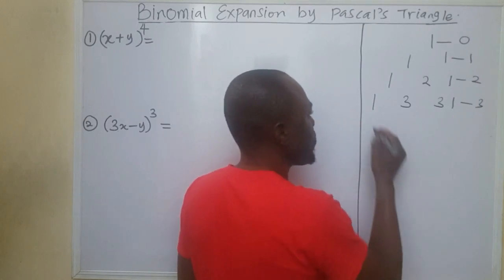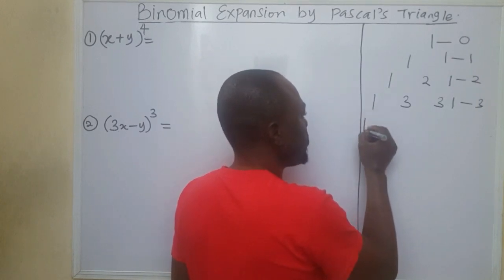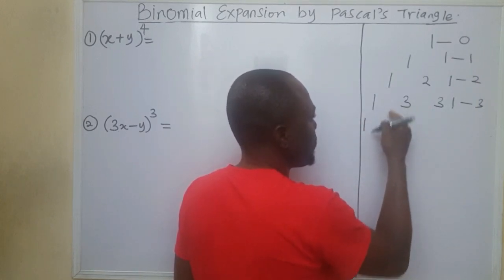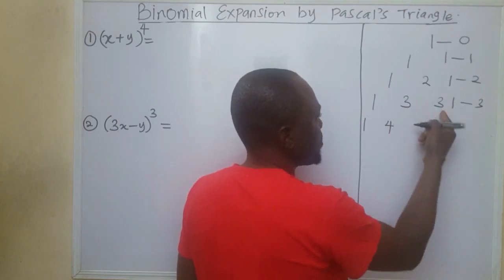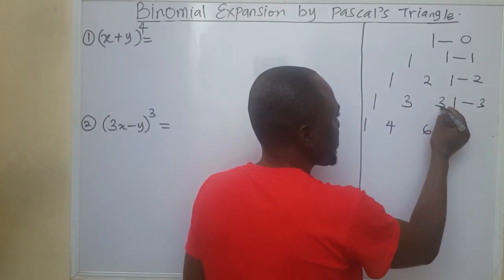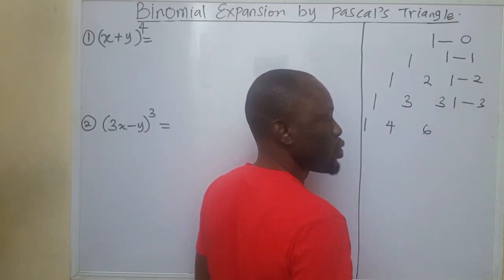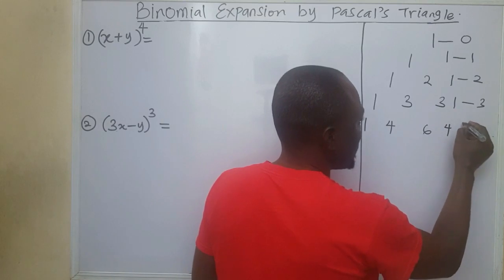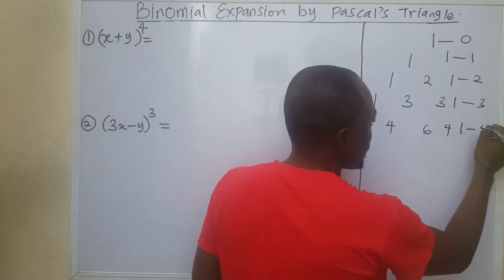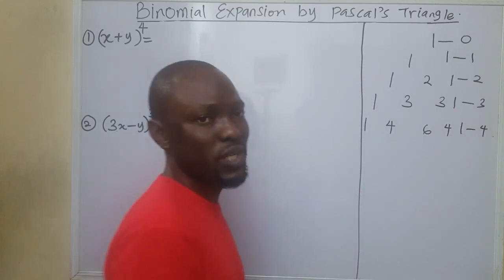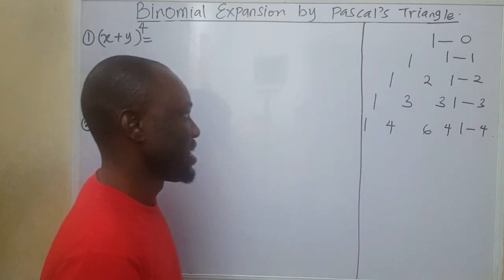For the power of 4, I will bring 1 at the end. 1 plus 3 is 4, put 4 in between. 3 plus 3 is 6, put 6 in between. 3 plus 1 is 4, put 4 in between. And then I will bring 1 for power of 4. And then it goes on and on like that.